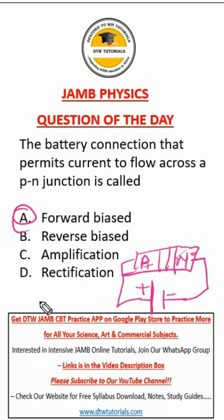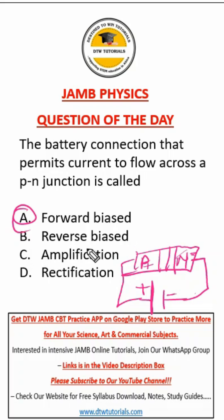The only way this happens is in a forward bias system. In a forward bias system, it permits current to flow. As for reverse bias, it prevents current flow — the terminals switch. So our answer here is forward bias.